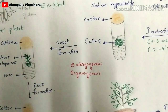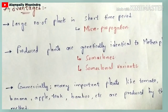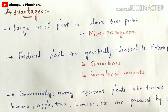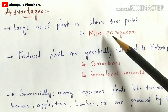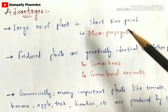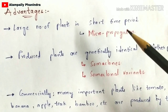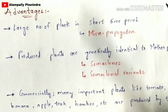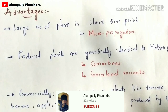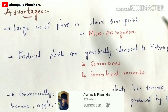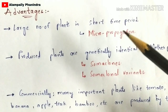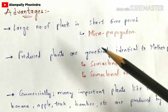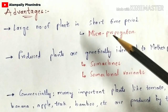Now let us discuss the advantages of plant tissue culture technique. First, a large number of plants can be produced in a very short interval of time, and this process is called micropropagation. The physical process — choosing a mother plant, isolating the explant, and doing surface sterilization — does not take more than 20 minutes. This makes it very easy to produce large numbers of plants in a short time.